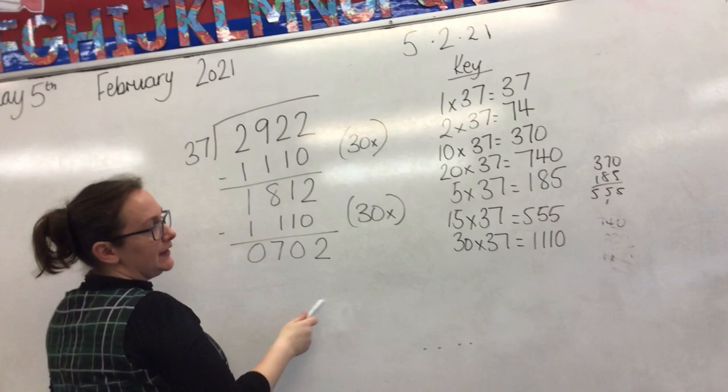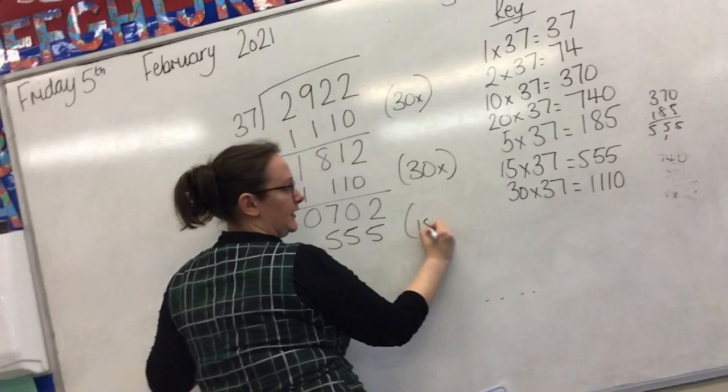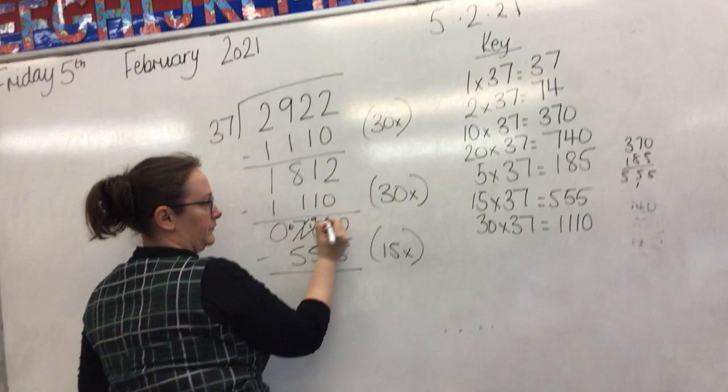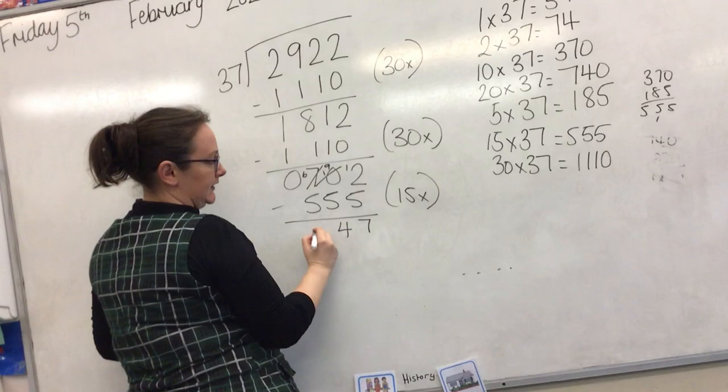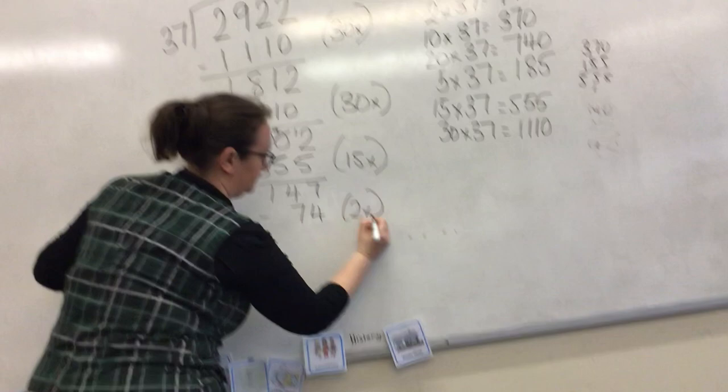Then I go for the next one. I can't take 740, that's too high, but I could take 555, which is 15 times. So 2 take 5 you can't do - you can't borrow from there, so we're going over here. 12 take 5 is 7, 9 take 5 is 4, and 6 take 5 is 1. Then I'm going to take off 74, which is 2 times.